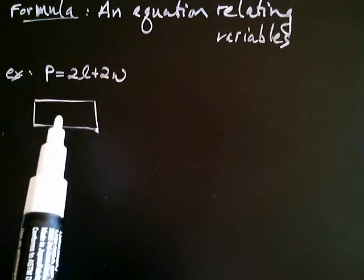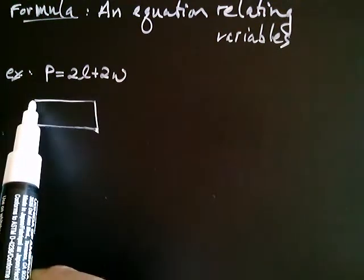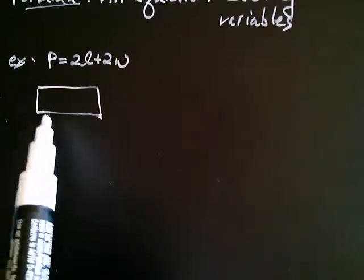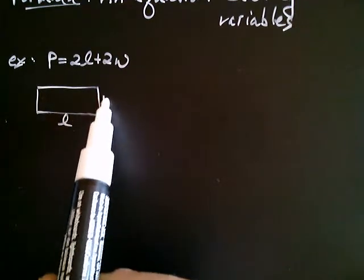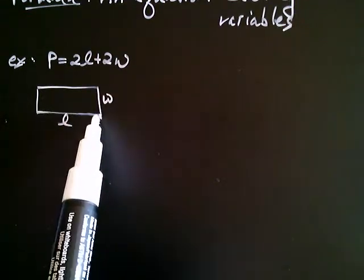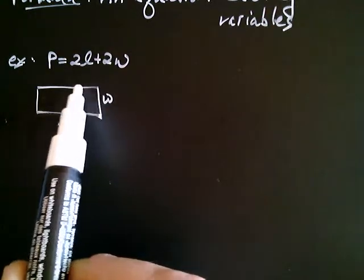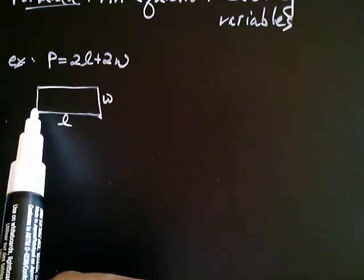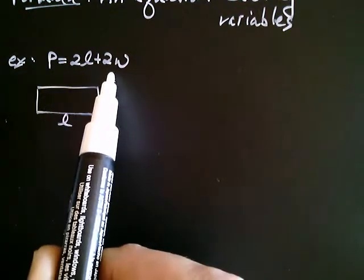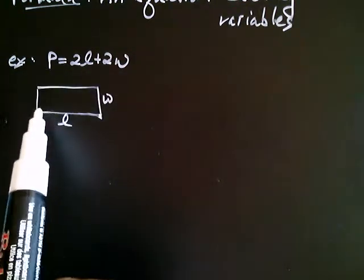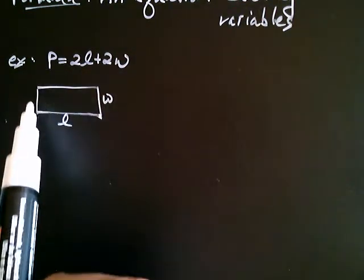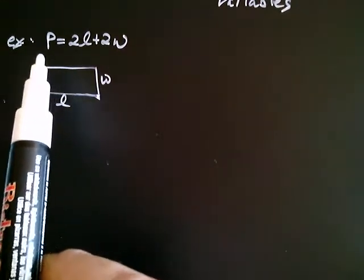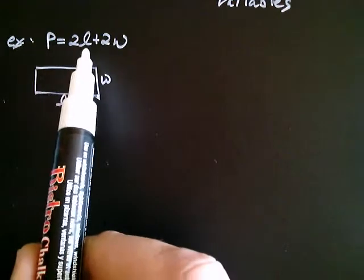For example, if this was like your garden and this was L and this was W, you'd have to walk L plus W plus another L, which is how you get 2L, plus another W, which is how you get 2W. So the perimeter represents how far you'd have to walk all the way around. So this is a formula that gives you the perimeter in terms of the length and the width.